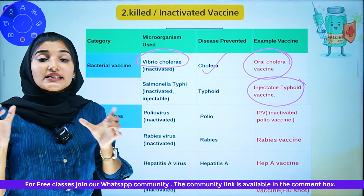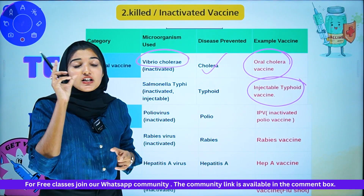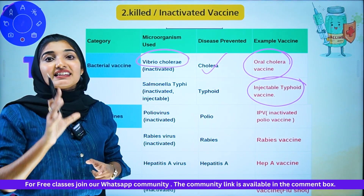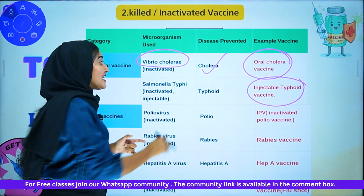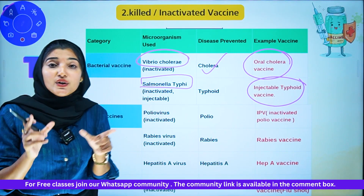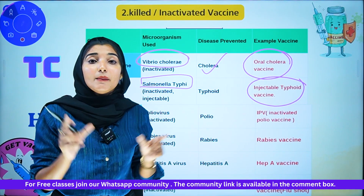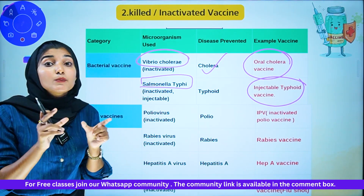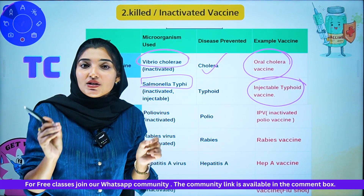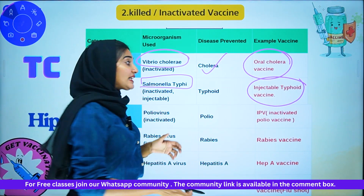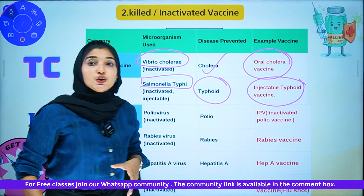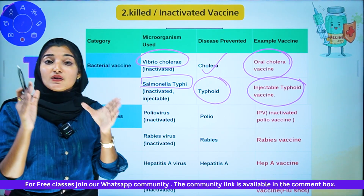For the injectable typhoid vaccine, it is a killed or inactivated vaccine. The microorganism is the bacteria Salmonella typhi — the same organism as the oral typhoid vaccine, but this is the killed version. The disease it protects against is typhoid.